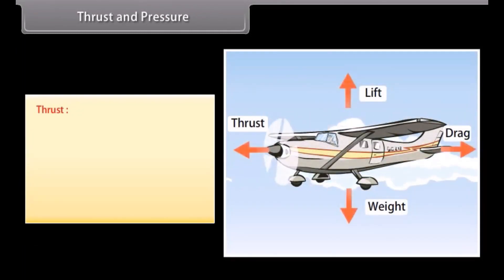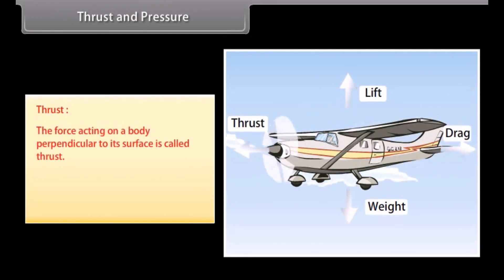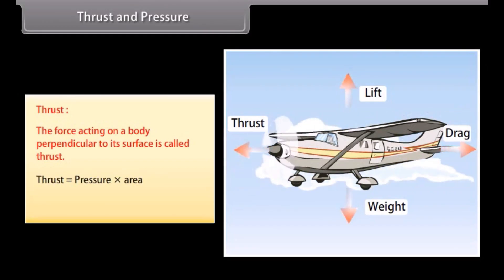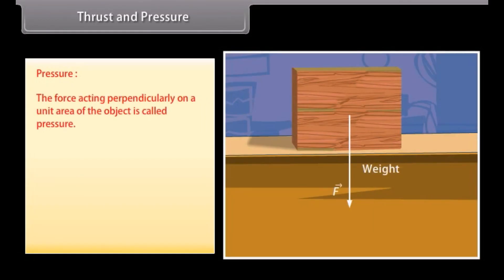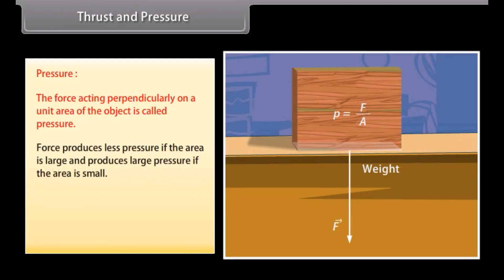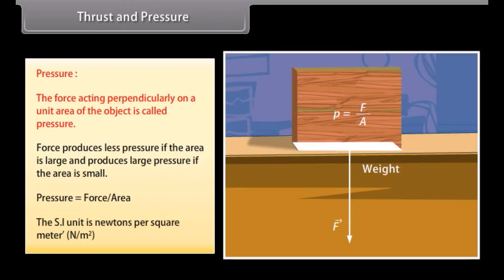Thrust and pressure. Thrust is the force acting on a body perpendicular to its surface. Thrust equals pressure times area, and its SI unit is Newton. Pressure is the force acting perpendicularly on a unit area of an object. A force produces less pressure if the area is large and produces greater pressure if the area is small. Pressure equals force divided by area, and its SI unit is Newton per square meter (N/m²).